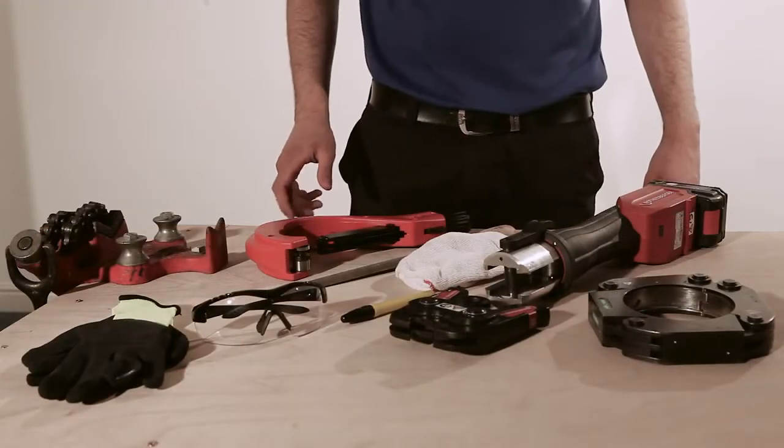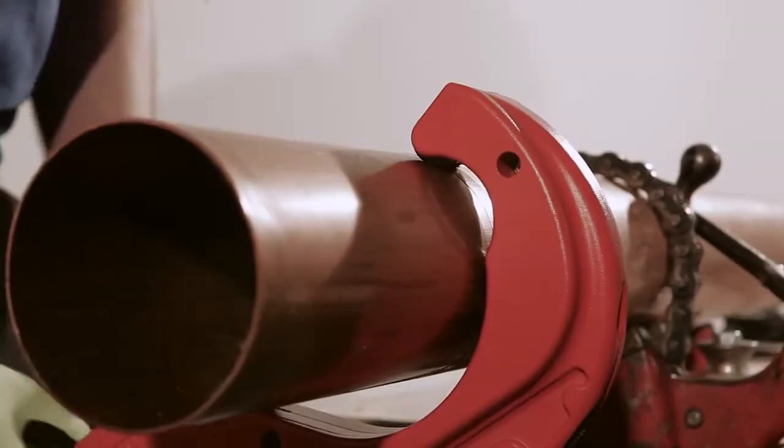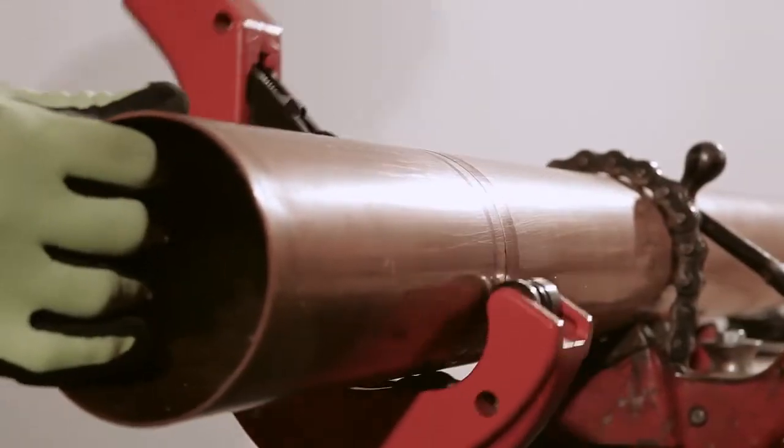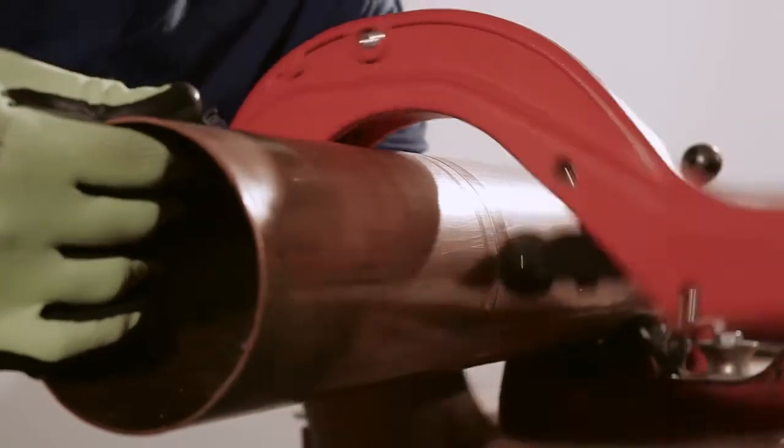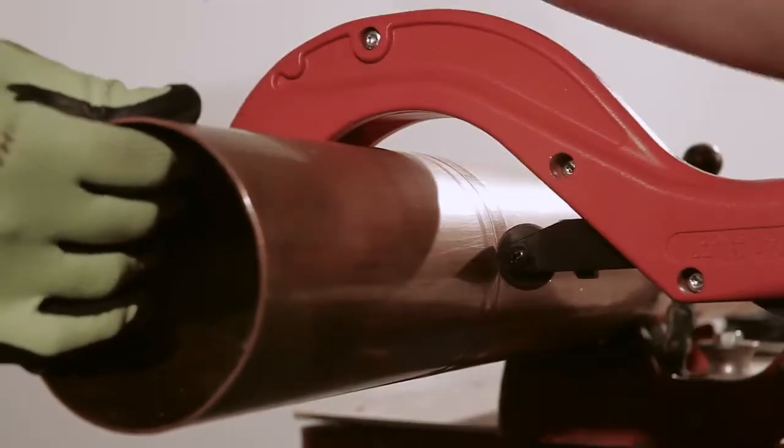The pipe should be cut with a Rothenberger pipe cutter, with a suitable wheel for the material you are working on. Please do not use a hacksaw or compound saw, as this can affect the success of the final joint and warranty.